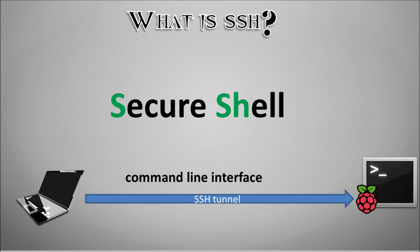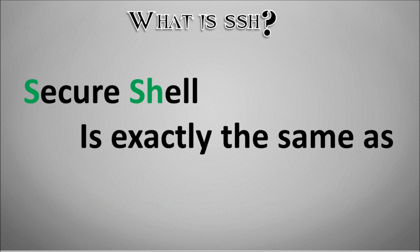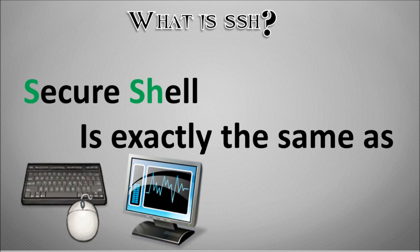What differentiates SSH from other connection types is the fact that it's encrypted and it's a secure connection. SSH — secure shell — is exactly the same as using a keyboard and a monitor. If you plug your Raspberry Pi into your television or a PC monitor and connect a keyboard to it and start issuing commands, that is exactly the same as what you're doing via SSH. The only difference is you don't have to hijack the family's TV. You can just use your laptop and connect into it — it's just an alternative method of accessing your Raspberry Pi.